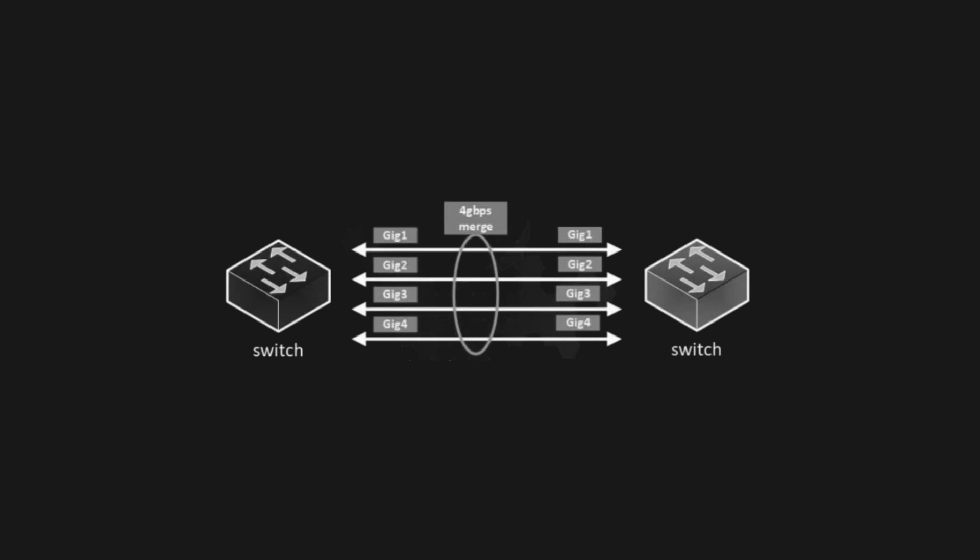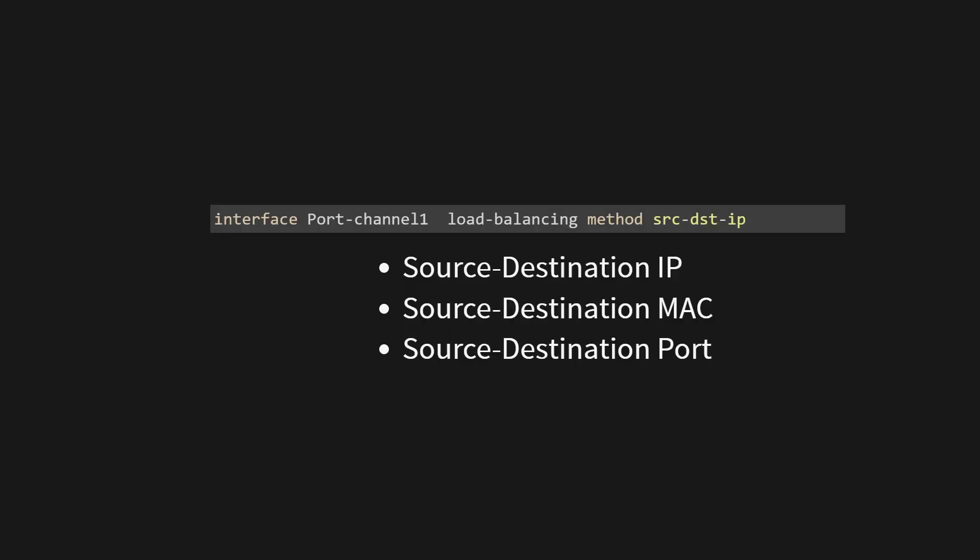For example, imagine a scenario where we have 4 Gigabit Ethernet links between two switches. Instead of using them as individual links, we can bundle them into an EtherChannel to create a higher capacity logical link. EtherChannel load balancing ensures that traffic is distributed evenly across the bundled links, preventing bottlenecks on individual links.